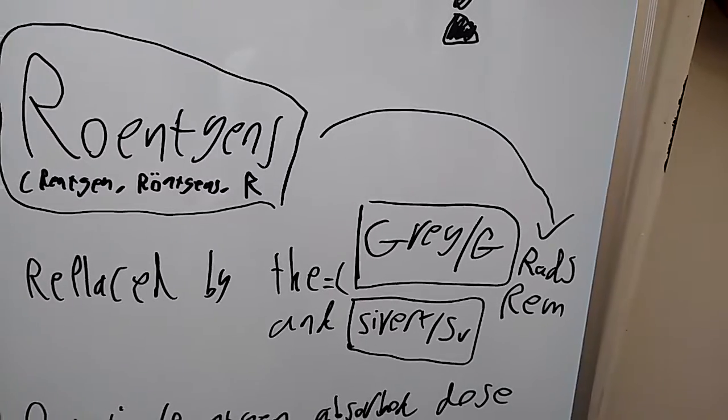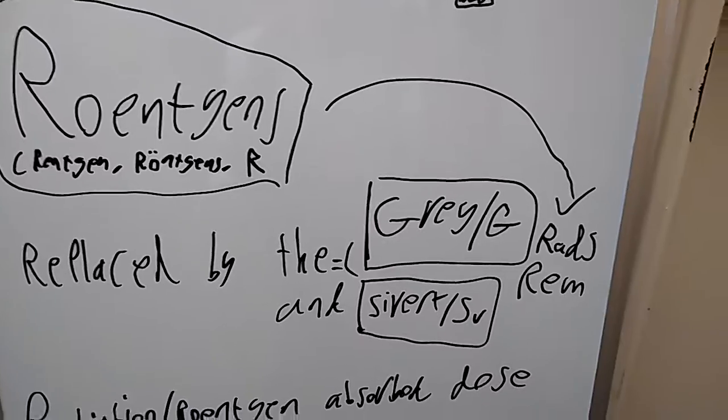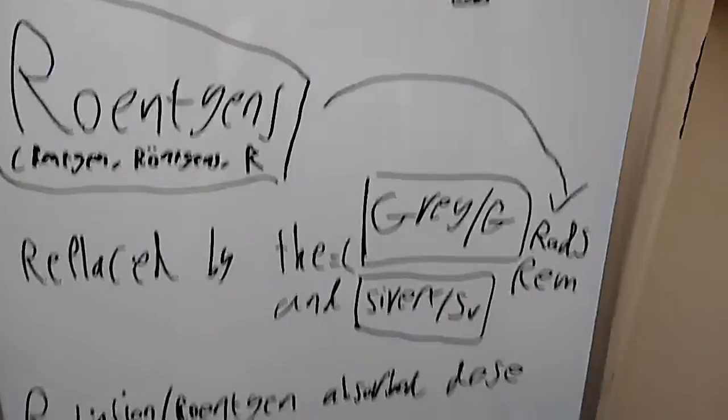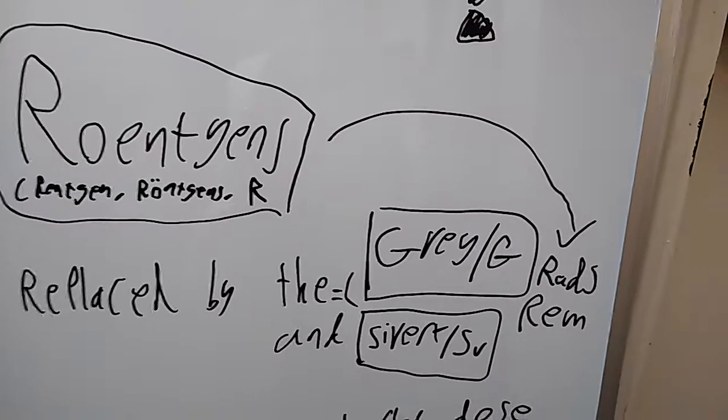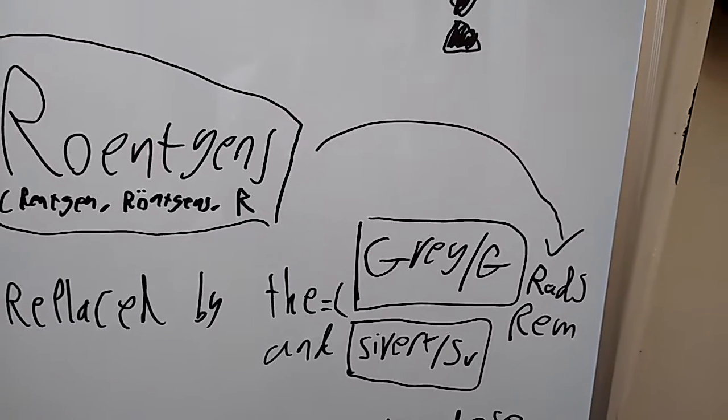So the reason the Gray and the Sievert replaced them is they're to give you better indications of damage to humans. So a Gray is basically a certain amount of human tissue that's being ionised. And the Gray and the Sievert as single units are much, much higher than Röntgens. We'll get to that on the bottom of the board.